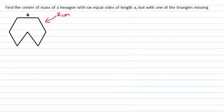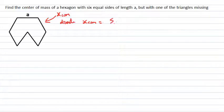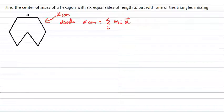Now what do I know about the center of mass? The center of mass position for discrete systems is given by the sum over i of the discrete masses mi, multiplied by their position coordinates, all divided by the total mass of the system.